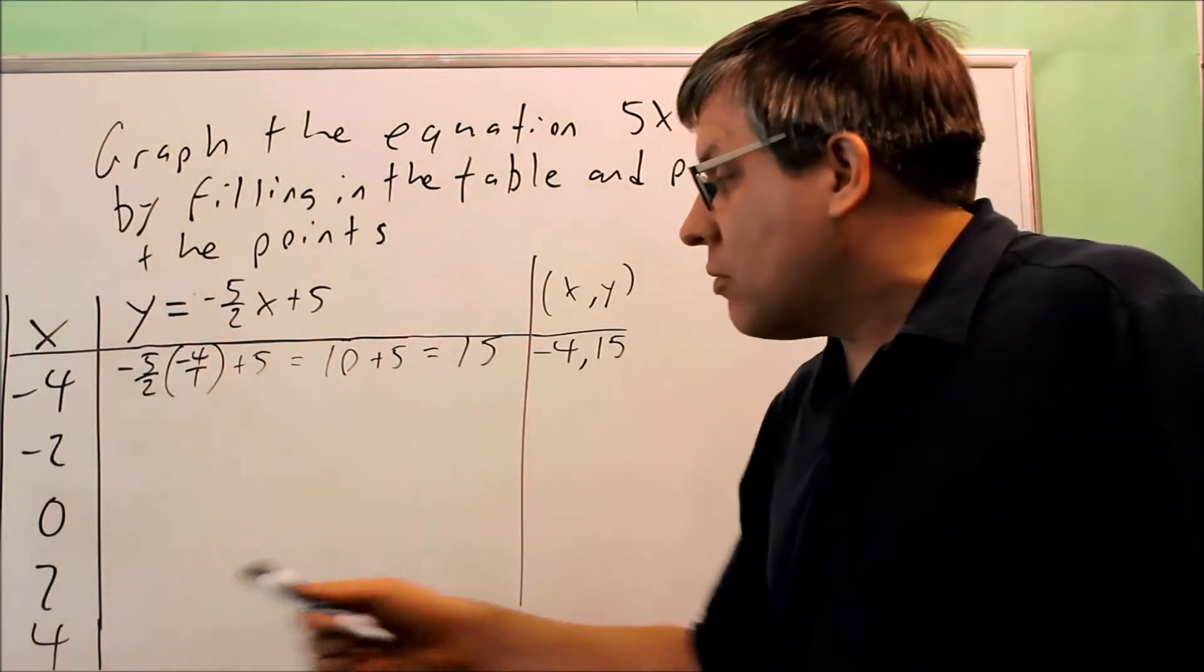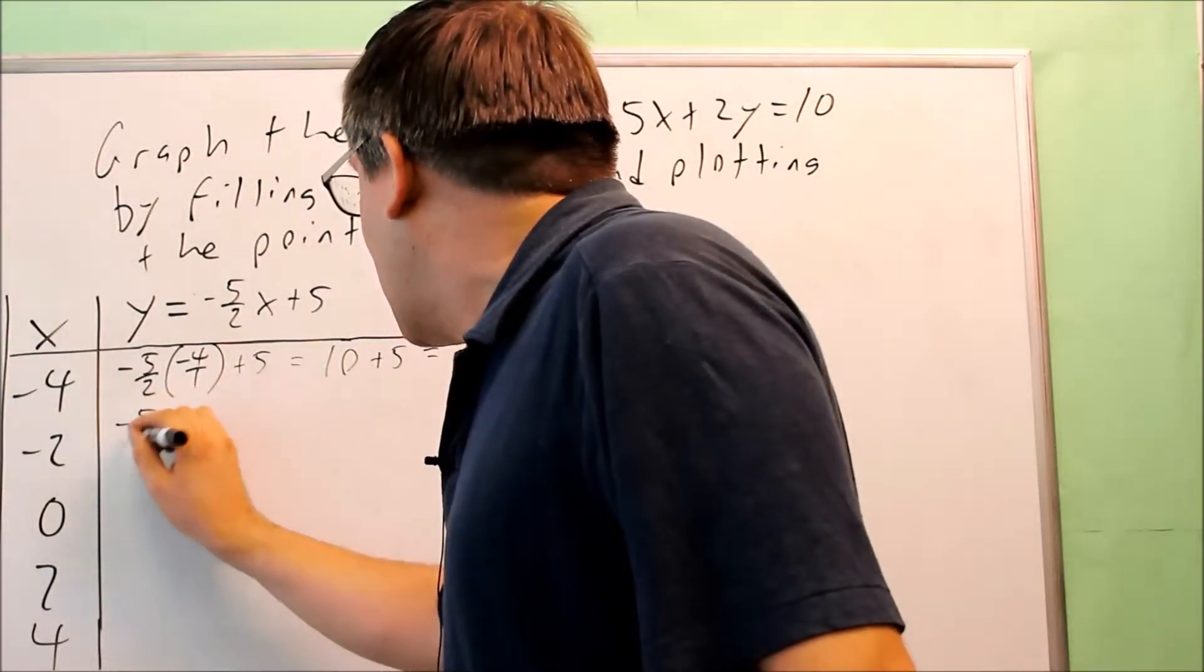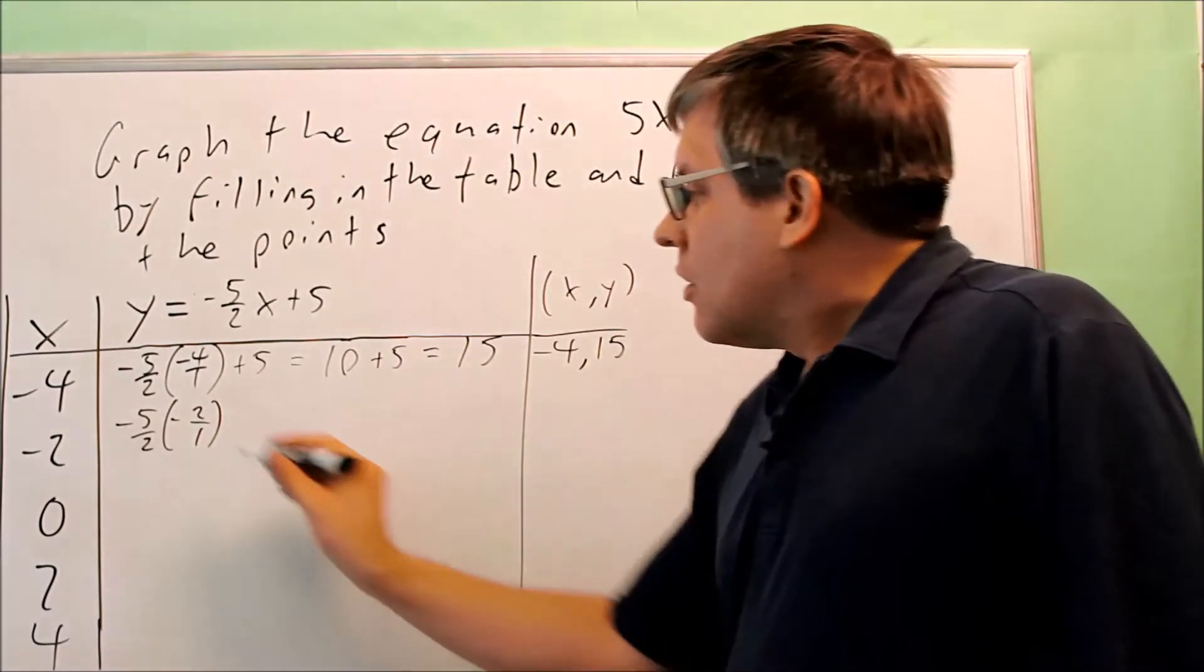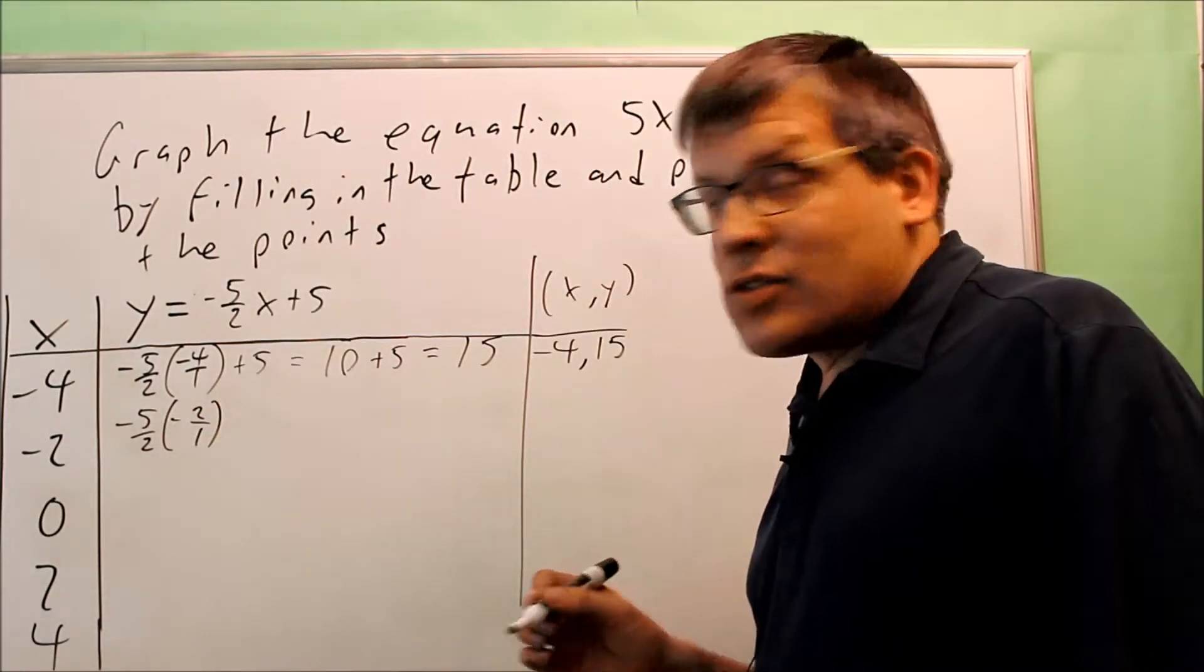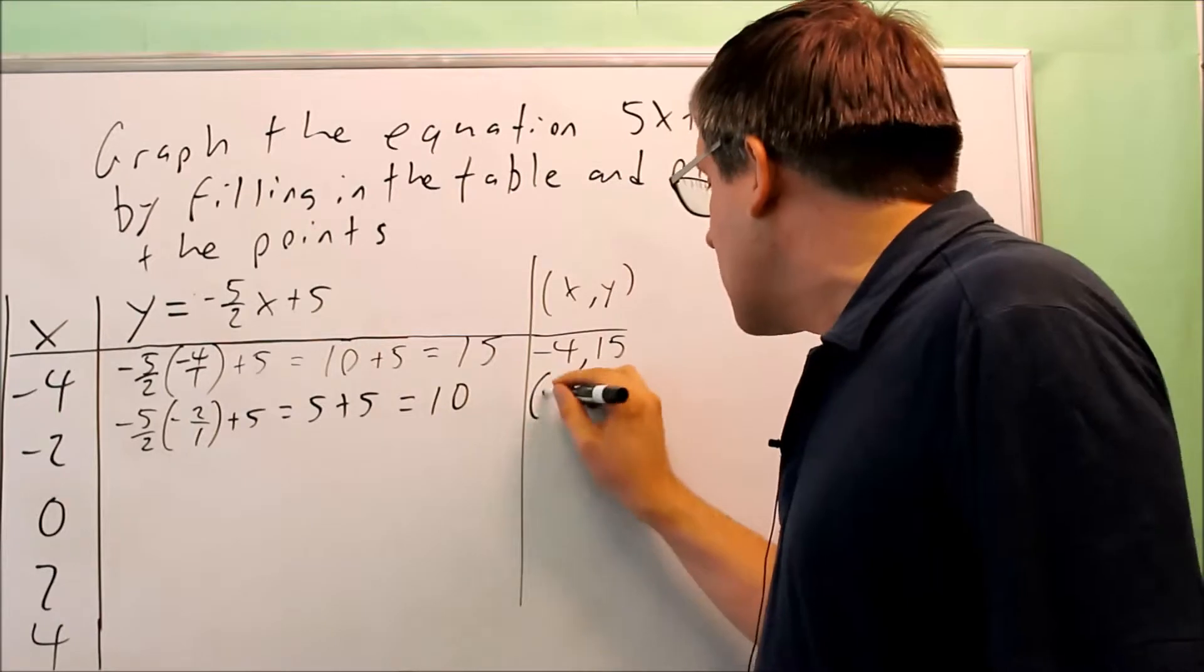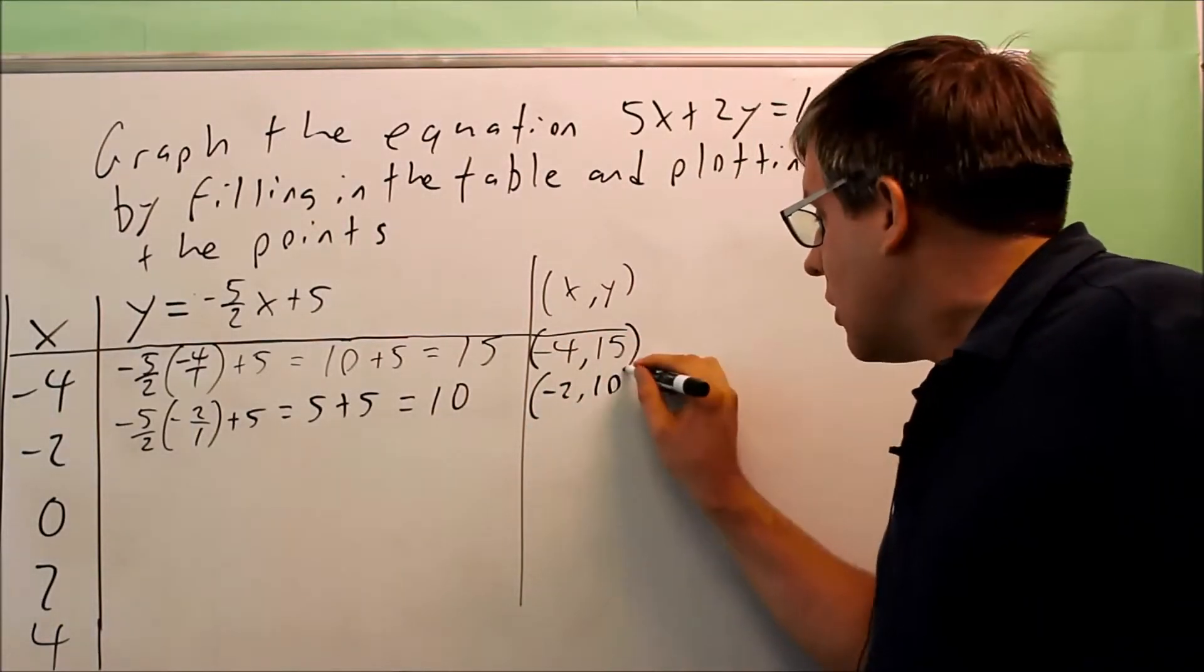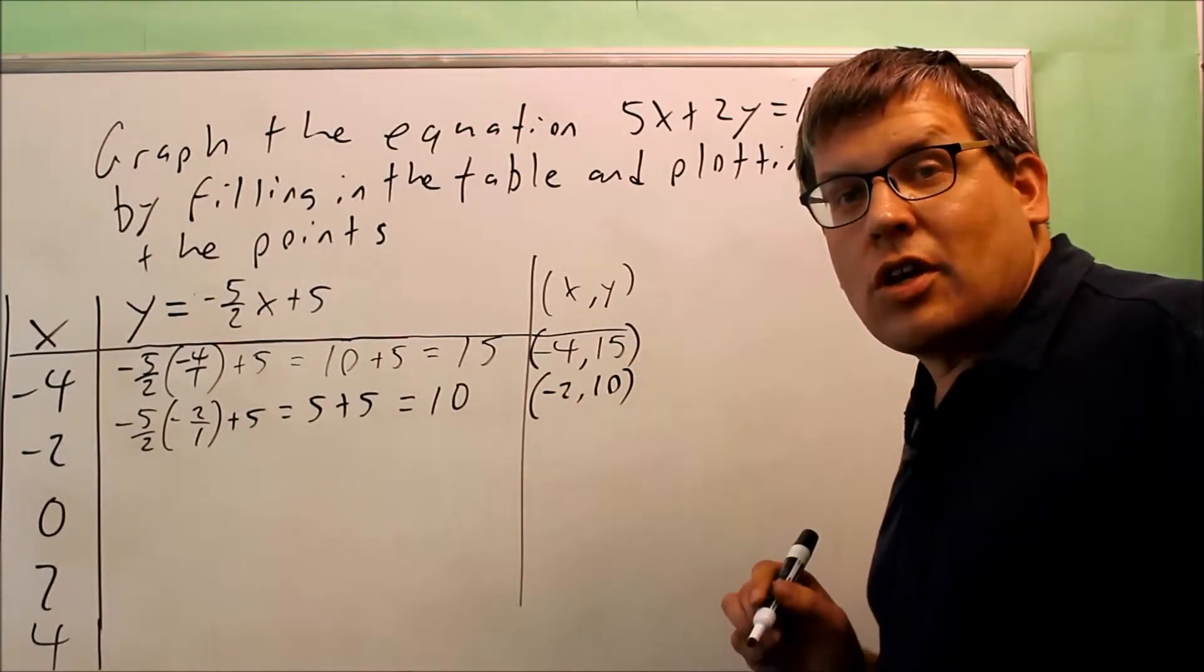I want to keep on going with the rest of this to fill in the rest of the table. Negative 5 halves, negative 2 over 1. Multiply that. The 2's are going to cancel. I get negative and negative will be positive 5. So I get 5 plus 5. That's going to be 10. So negative 2 and 10. That's going to be your next set of points. Negative 2 and 10 will be another point that's on your line.